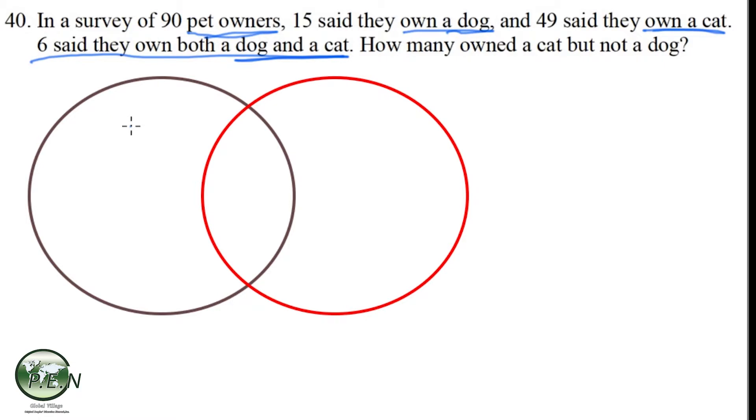But first we really should set up our circles. Let's call one of them our dog owners. We'll call the black enclosed circle the dog owners. The red enclosed circle will be our cat owners.